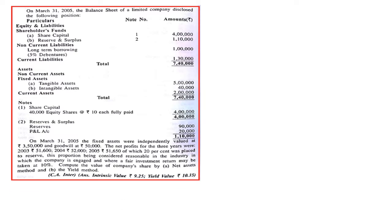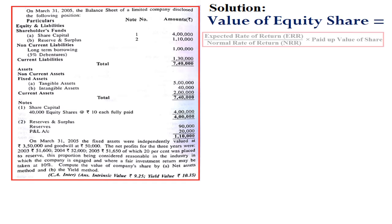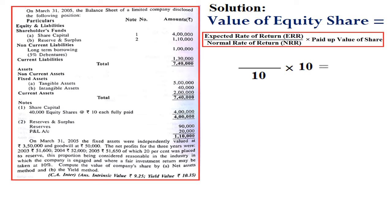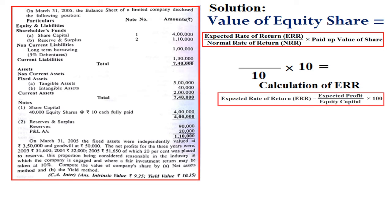Now we take up the second method — yield value method. For calculation of yield value of share, the formula is: Expected Rate of Return (ERR) divided by Normal Rate of Return (NRR), multiplied by paid-up value of share. In this question, NRR is given. Paid-up value is also available — rupees 10 per share. We need to calculate ERR. The formula for ERR is: expected profit divided by equity capital, multiplied by 100. Equity capital is already available — 4 lakh rupees — but we need to calculate the expected profit.